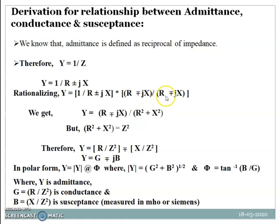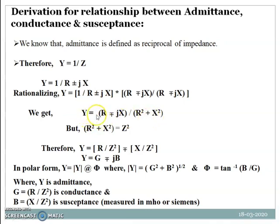After rationalizing, we get Y equal to R minus or plus jX, divided by the product of R plus or minus jX and R minus or plus jX. The denominator simplifies because plus-minus into minus-plus gives minus, but j squared equals minus 1, so the minus signs cancel and the denominator becomes R squared plus X squared, which equals Z squared.